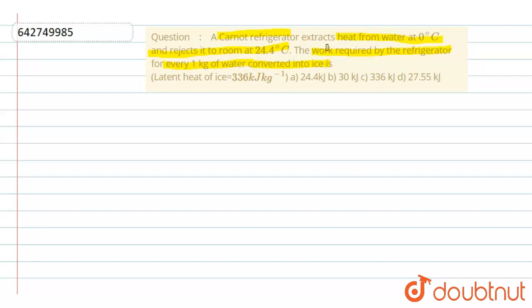Firstly, here in this question it is mentioned heat extracted from water at 0 degree Celsius and rejected at 24.4 degree Celsius. So we will convert these temperatures into the Kelvin scale. Firstly, temperature of sink, or you can see the source...